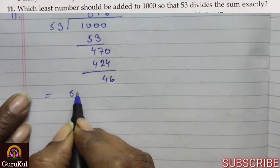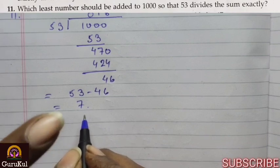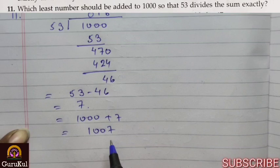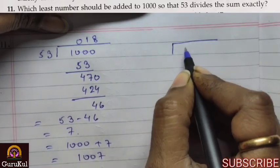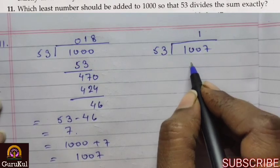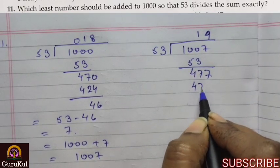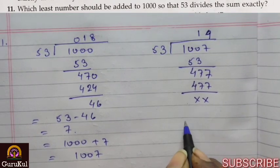So now the next step is, we will subtract 46 from 53. We will get the answer 7. And now this 7 we are going to add to 1000. So 1000 plus 7 will give us 1007. And now when we will divide 1007 with 53, we will get a complete answer without any remainder. So the least number which should be added to 1000 is 7.